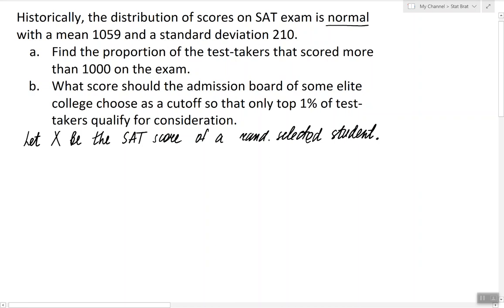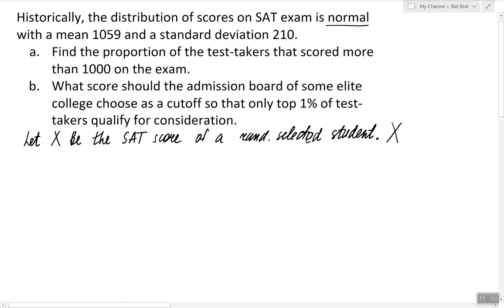What do we know about X? Since X is coming from a normal distribution, X will have a normal distribution itself. The question is now about what the parameters of that normal distribution are, and they are given: the mean is 1059 and the standard deviation is 210. So X will be a normal random variable with μ = 1059 and σ = 210.